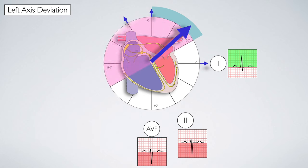I'm going to shade in the area of the hex axial reference system here, so you can see what this adds to our analysis. It's effectively showing that the vector is moving beyond the minus 30 degrees, so we can confirm left axis deviation.